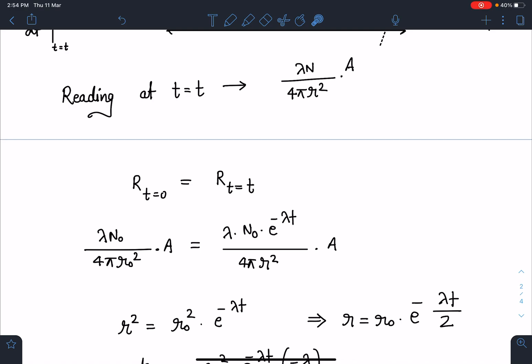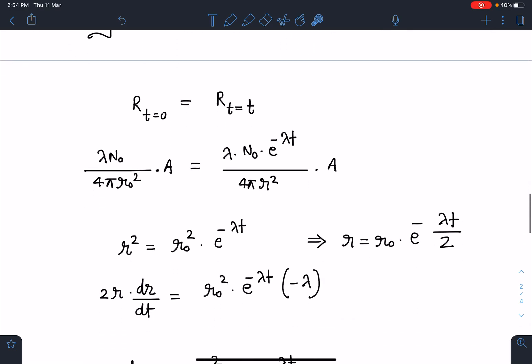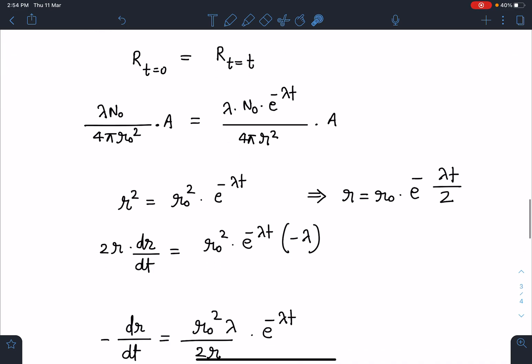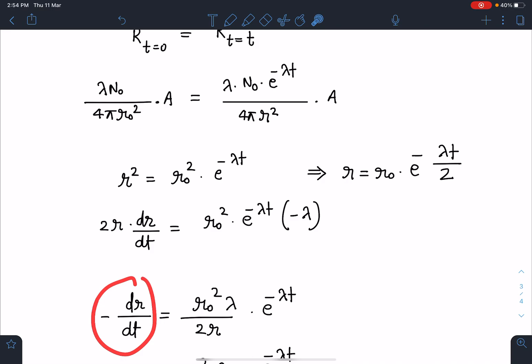Now I am going to differentiate this or differentiate this relation both ways. You can differentiate this or you can just differentiate this itself. 2R dr by dt R naught square e to the power minus lambda T times minus lambda. From here this minus dr by dt I can write it as R naught square lambda by 2R e to the power minus lambda T.